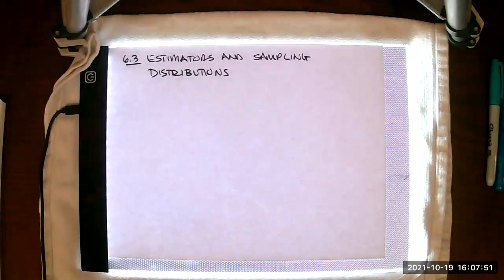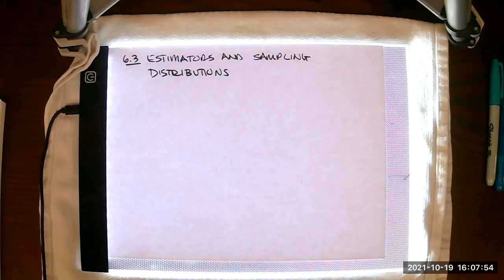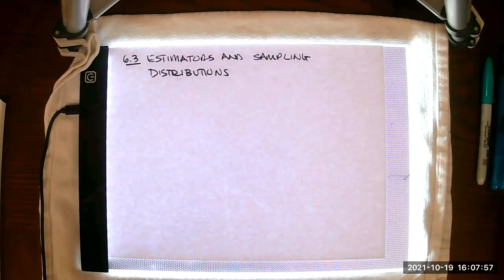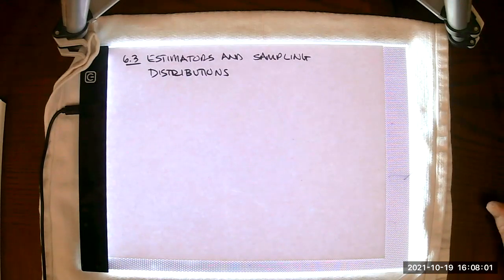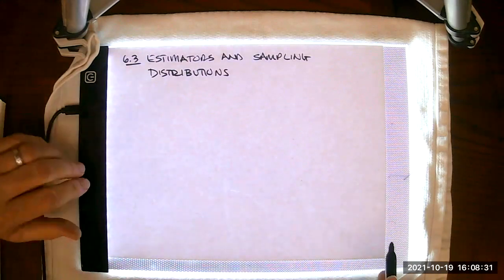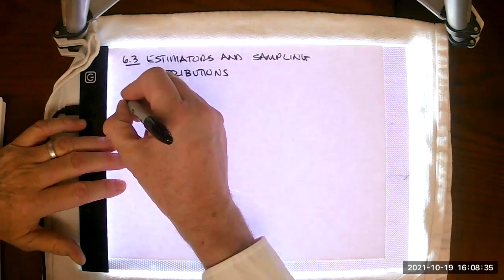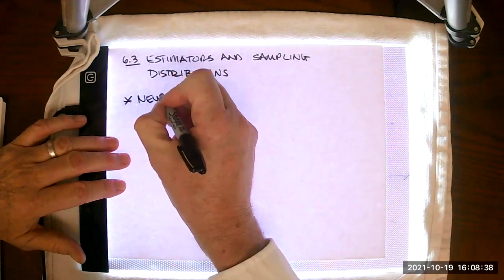Go ahead and hit record and talk about section 6.3, estimators and sampling distributions. As I've noted about the chapter 6 material, the last half of chapter 6 is quite theoretical in nature. 6.3 is where that theory begins and it continues on into 6.4. Before I talk about estimators and sampling distributions, I want to introduce a new metric.